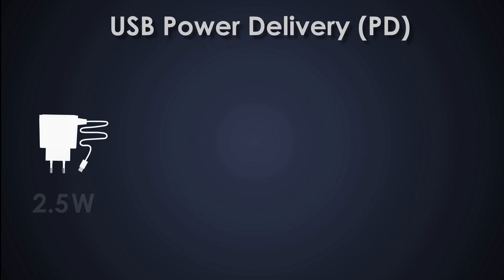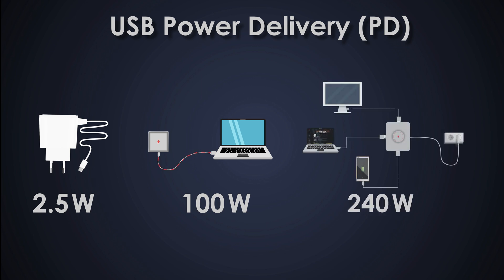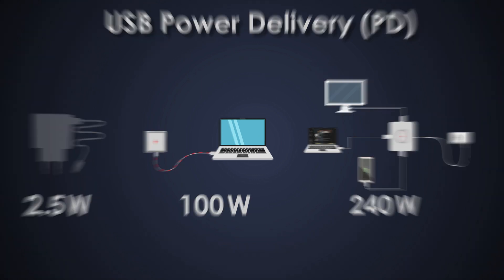USB power delivery grew from 2.5 watts — providing 5 volts at 500 milliamps with USB 2.0 — to a massive 100 watts with USB PD 3.0. Now with USB PD 3.1 we are talking up to 240 watts of power delivery, which is enough to power laptops, monitors, and much more.